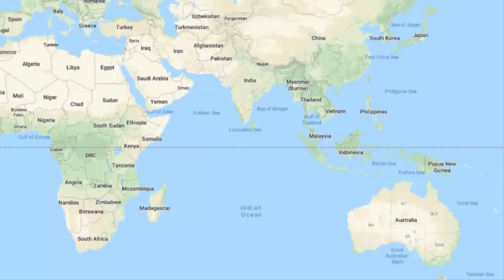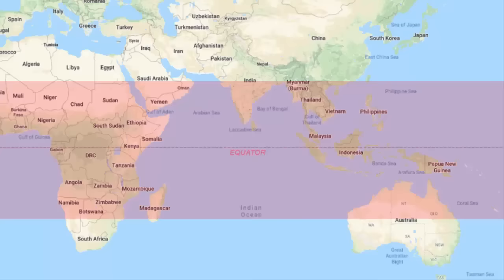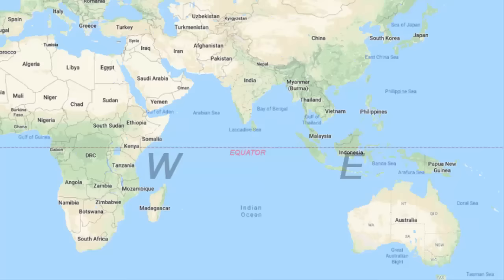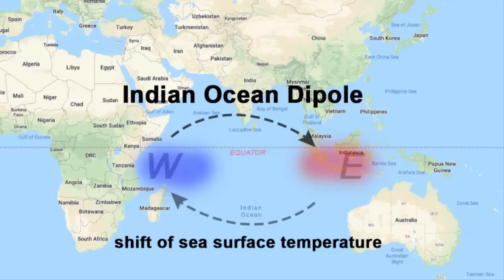The Indian Ocean lies in the tropical region — this is the western side and this is the eastern side. There is an irregular shift of sea surface temperature from the western side to the eastern side of the Indian Ocean, and vice versa. That means if the western Indian Ocean becomes warmer, then the eastern part will be cooler, and similarly, if the eastern part is warmer, then the western part will be cooler. This irregular shift of sea surface temperature is called the Indian Ocean Dipole.